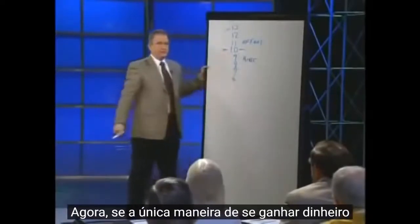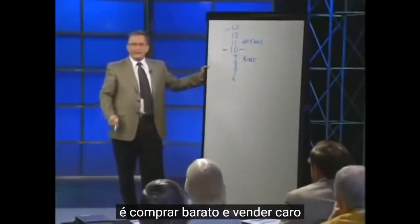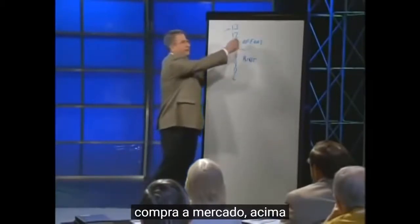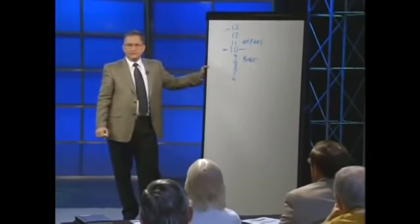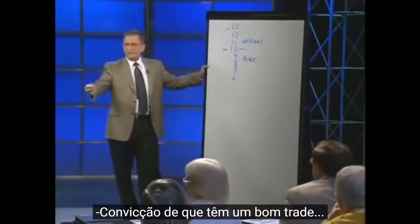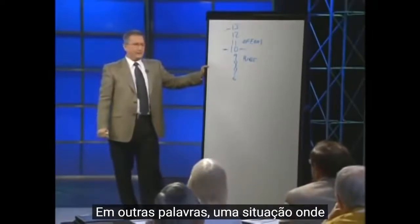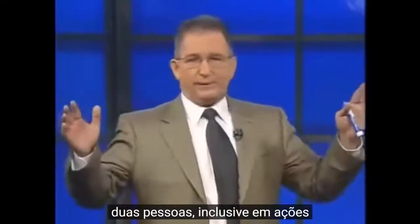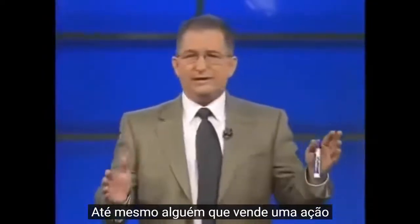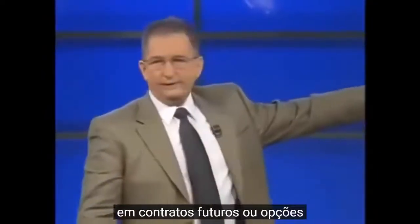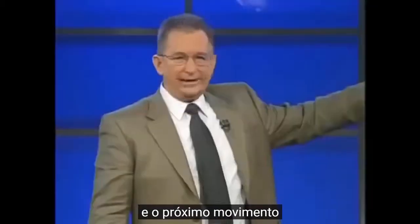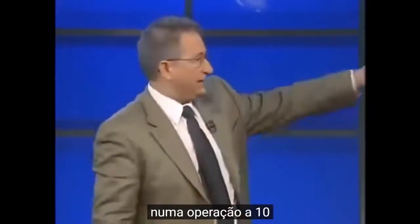For prices to move, somebody literally has to bid the market up; for prices to go lower, someone has to offer it lower. Why would anybody bid the market past the last posted price? Conviction. On every trade, there are two people on both sides — a buyer and a seller — and the next tick is going to make one of them a winner and one of them a loser.